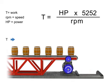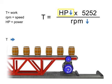Similarly, the opposite is true. If we wish torque to remain constant and decrease speed, then the horsepower of the motor also decreases.